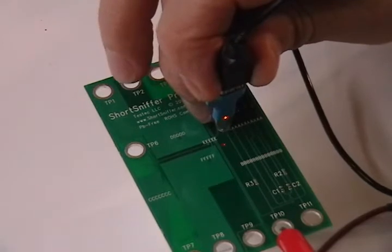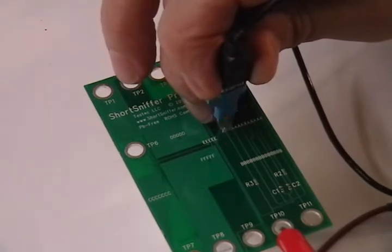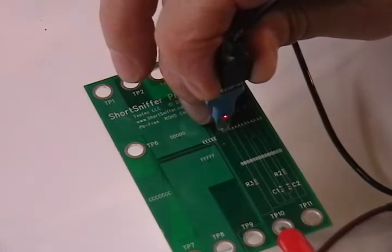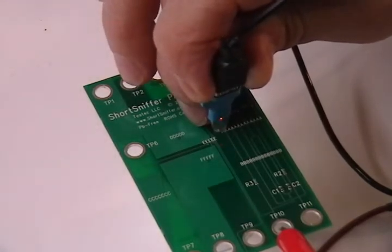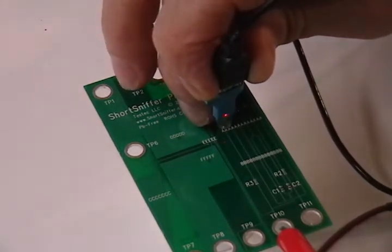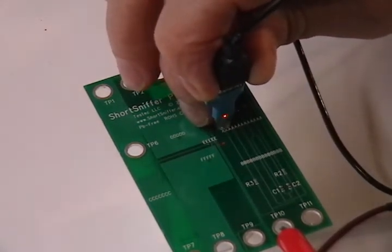Here's the tiny probe, and I can move it across the signal looking for the maximum amplitude, and very little motion gets us to the peak and away from the peak. Within a couple millimeters, we can determine the center of this trace.